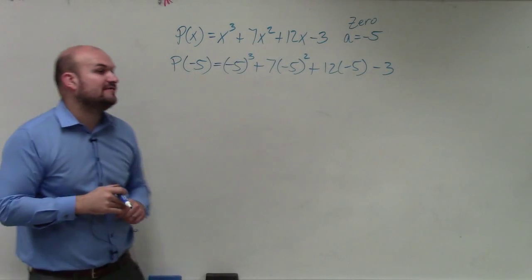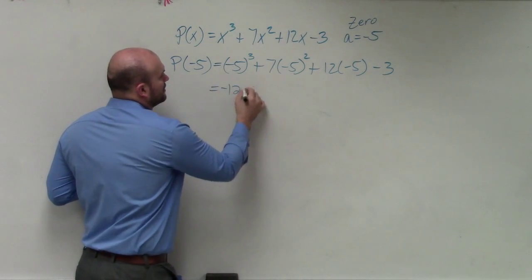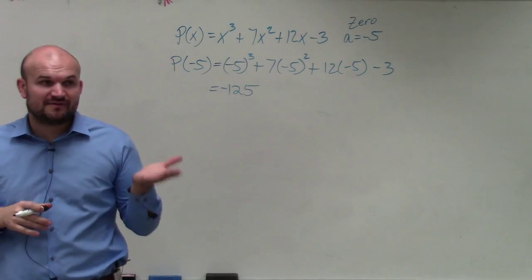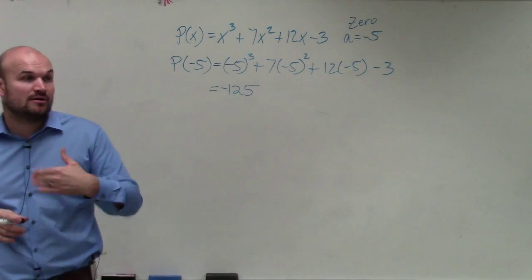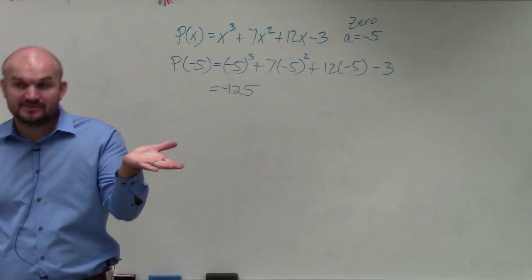So negative 5 cubed is negative 5 times negative 5 times negative 5, which is negative 125. Remember, any time you have a negative number raised to an odd power, it will always be negative. A negative number raised to an even power, though, is going to be positive.